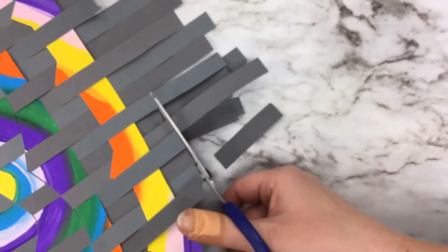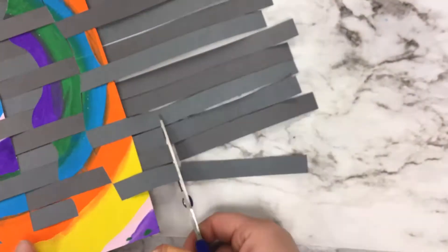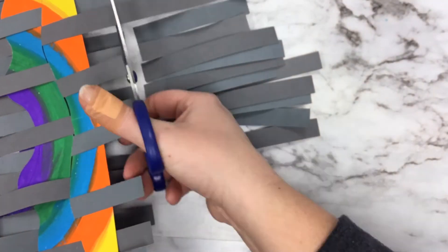After you finish weaving, we're going to trim the strips on the side, leaving a little bit of leftover to overhang as a fringe for our weaving.